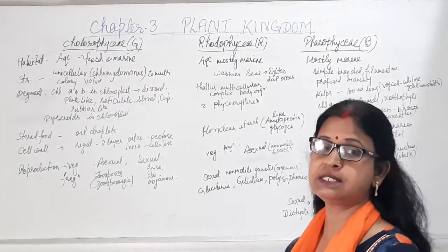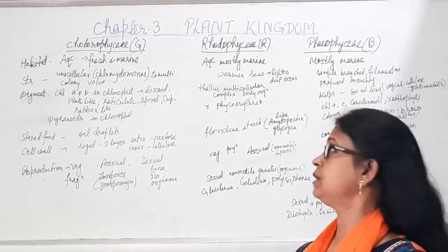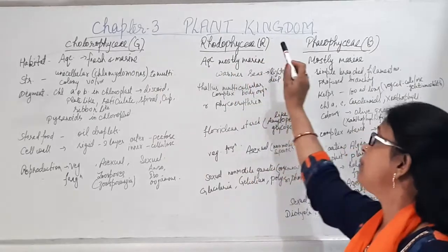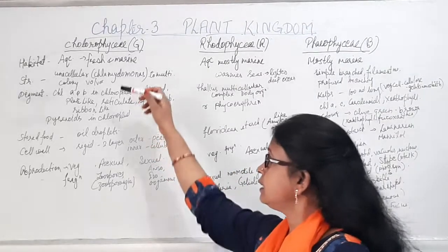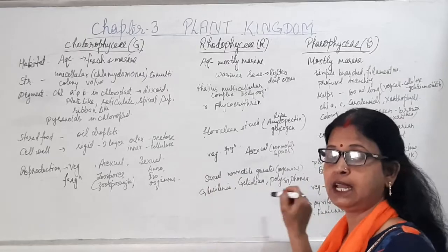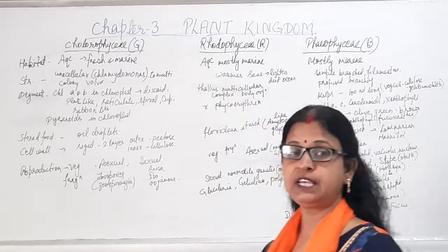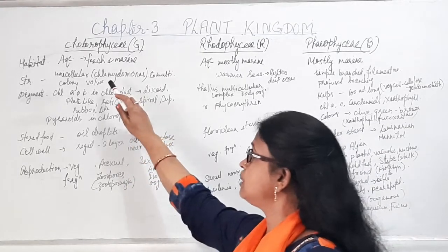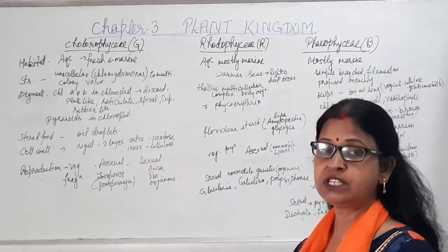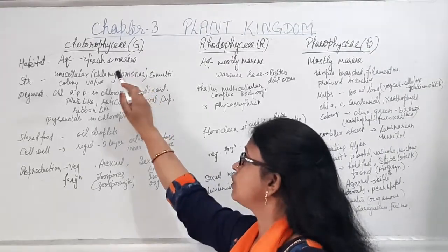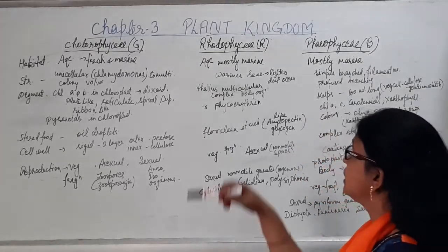Algae can be divided into three classes — Chlorophyceae, Phaeophyceae, and Rhodophyceae — depending upon the pigments present. Chlorophyceae is green algae, Phaeophyceae is brown algae, and Rhodophyceae is red algae. For habitat: most Chlorophyceae are aquatic, both fresh water and marine, but mostly fresh water; Phaeophyceae is mostly marine water; Rhodophyceae is also mostly marine.